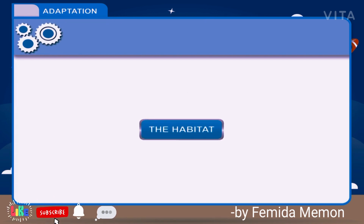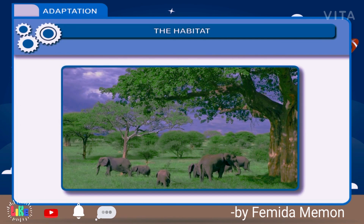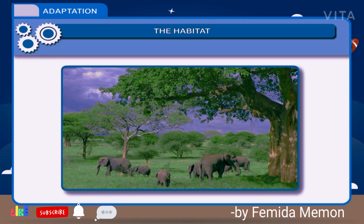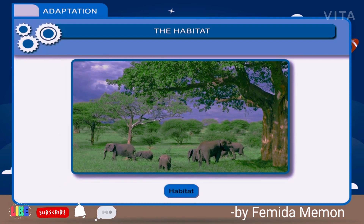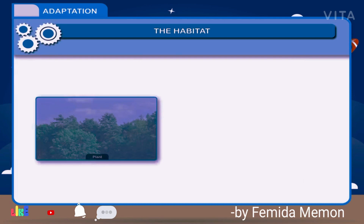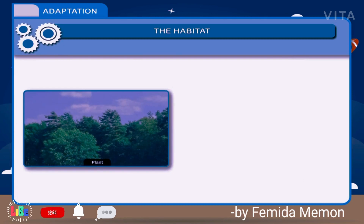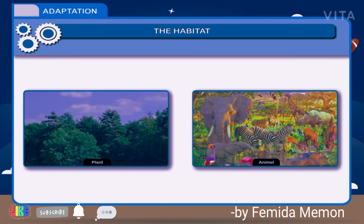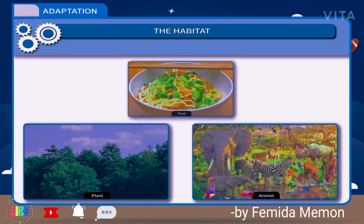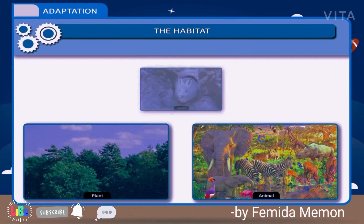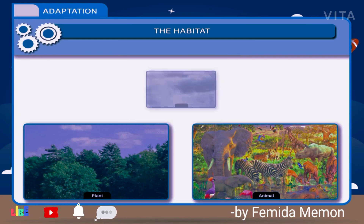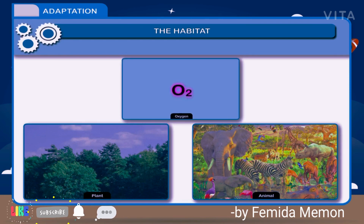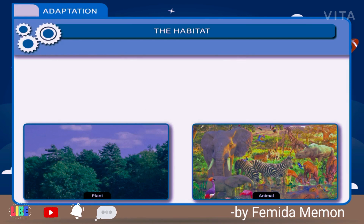The Habitat. A place where an organism fits in nature is the natural developing area of an organism, called habitat. Organisms, whether plant or animal, need food, shelter, water and oxygen from their surroundings.